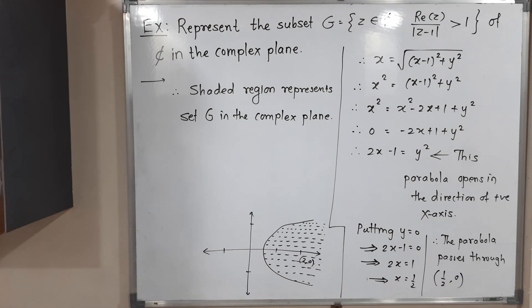Therefore, the shaded region inside the parabola represents the given set G in the complex plane. The example is complete. Thank you, see you.